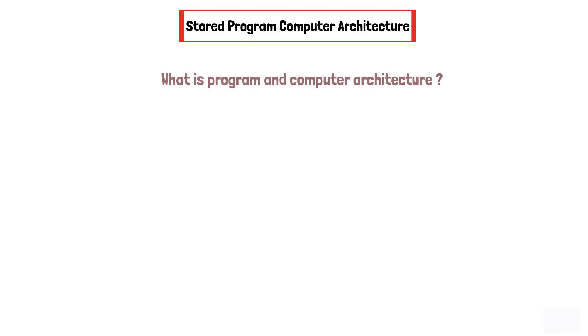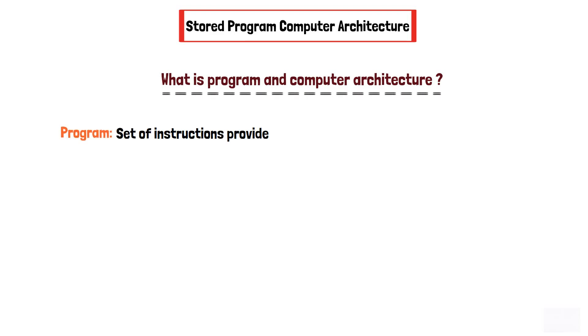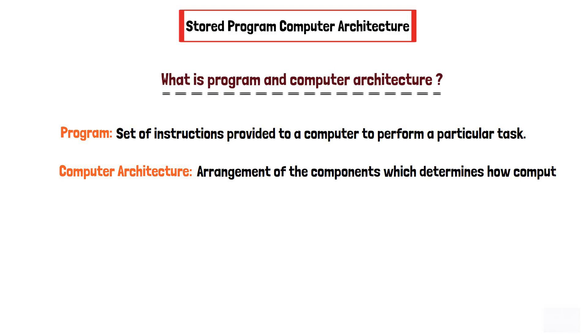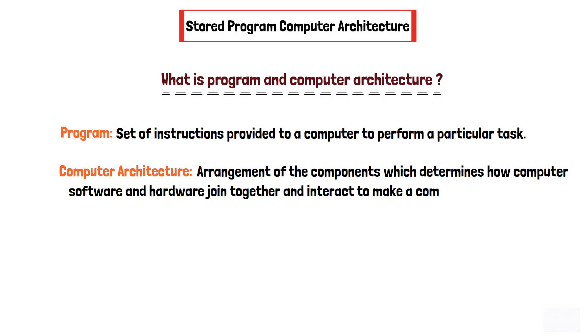In this video, we will learn about the stored program computer architecture. But before beginning the video, let's understand what is program and computer architecture. So the program is a set of instructions provided to a computer to perform a particular task, while a computer architecture is the arrangement of the components which determines how computer software and hardware join together and interact to make a computer work.